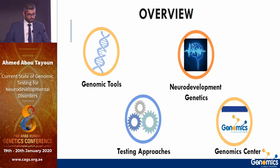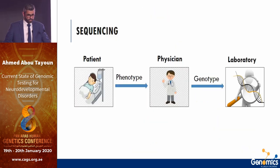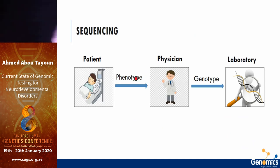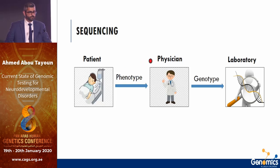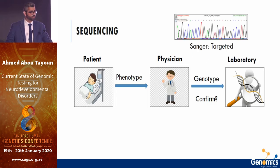Traditionally, a clinician would see a patient, do a physical exam, obtain medical history, order investigations to get a good idea about their phenotype and have a differential diagnosis. If a genetic etiology was suspected, they would send to the genetics lab only to confirm a diagnosis. This clinical genetic practice was limited by the technology back then, which is Sanger sequencing.